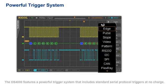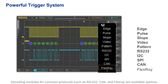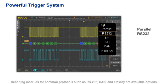The DS4000 features a powerful trigger system that includes standard serial protocol triggers at no charge. Decoding modules for common protocols such as RS232, CAN, and FlexRay are available options.